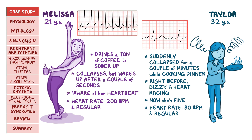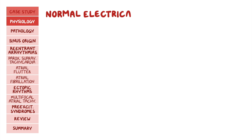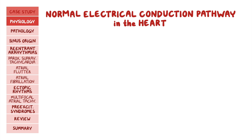Both Melissa and Taylor have experienced palpitations and syncope, and their ECGs reveal they both have some form of arrhythmia. The best way to approach arrhythmias is to first know what a normal ECG looks like, and second, have a good classification system to narrow down the diagnosis. Let's review the normal electrical conduction pathway in the heart and how it looks on an ECG.